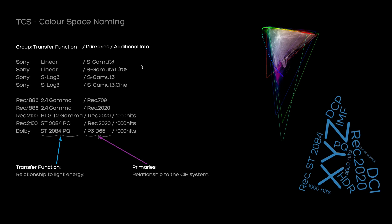Some color spaces have additional info followed by another forward slash. For example, HDR color spaces have their peak white roll-off defined in that additional info field. Some camera color spaces have a tag there indicating whether they're optimized for tungsten or daylight scenes.